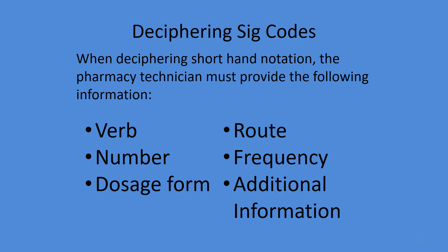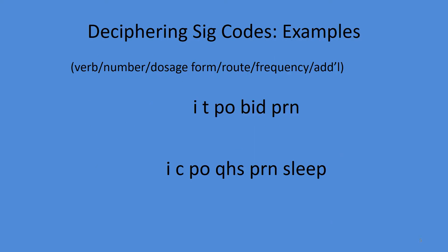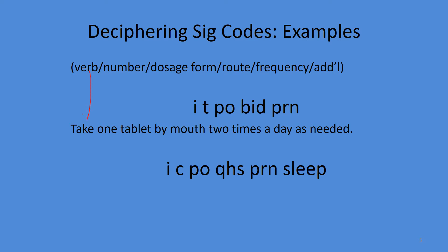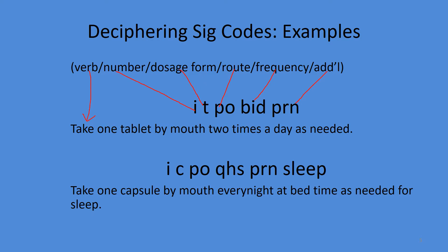As a quick review, those six elements are: verb, number, dosage form, route, frequency, and additional information. Try to decipher in that order as much as possible. Here's the rundown: no verb code is given, but we are given codes for number, dosage form, route, frequency, and additional information.